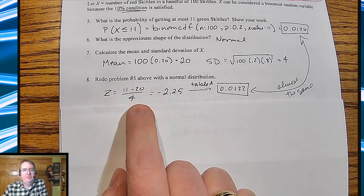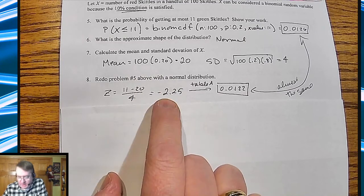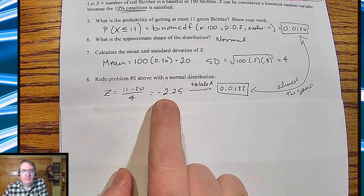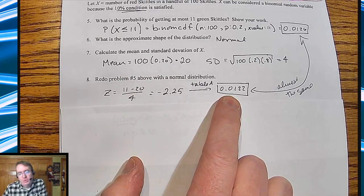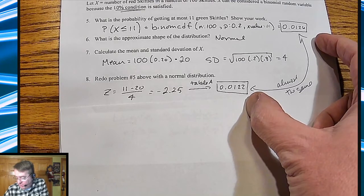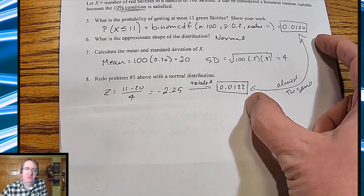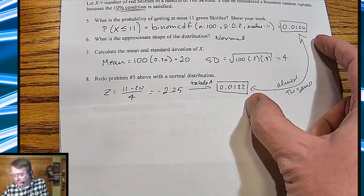So my z-score for 11: 11 minus 20 all divided by 4, I get a z-score of negative 2.25. We look that up on table A, and I get 0.0122. And if I compare those two numbers, you're only four ten-thousandths off, which would be what, four hundredths of a percent.